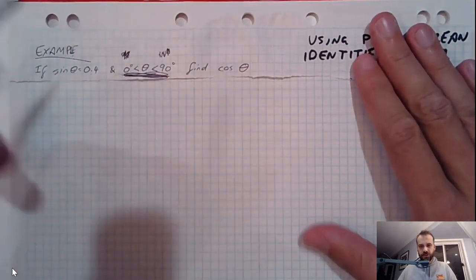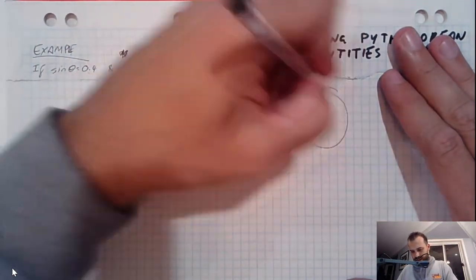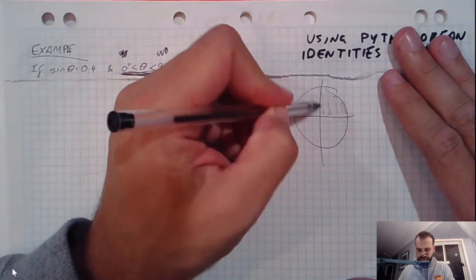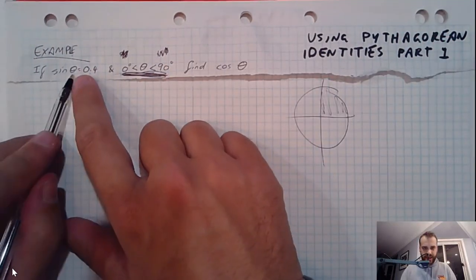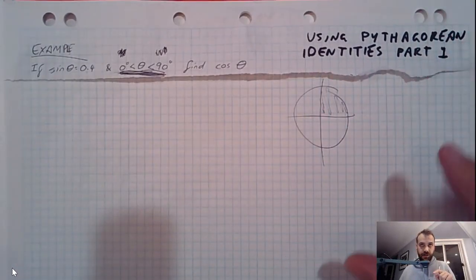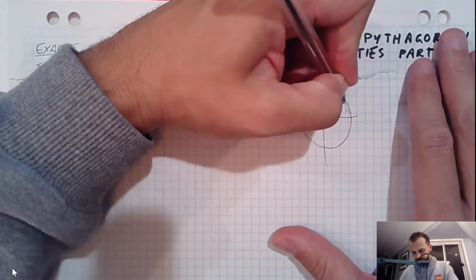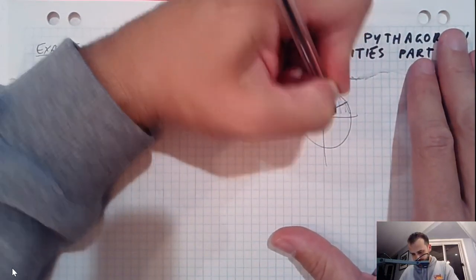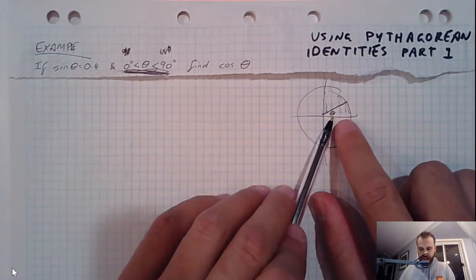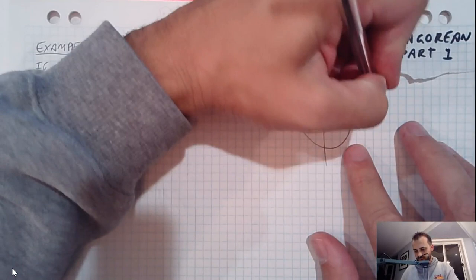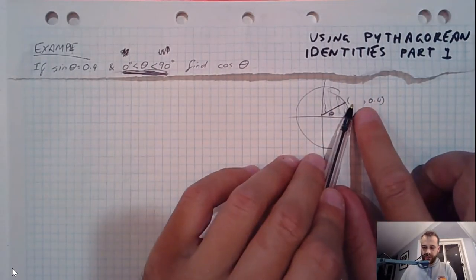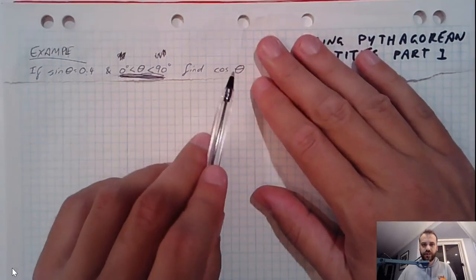So first of all, what's the question asking? Well, we've got a unit circle, we're in quadrant one, and there's some angle. I don't know what it is, but the y value, so it must be a bit like this, there's some angle there, and sine of that angle is equal to 0.4, which you would know is the y coordinate there, and we're going to find the x coordinate here, which will be cos theta.